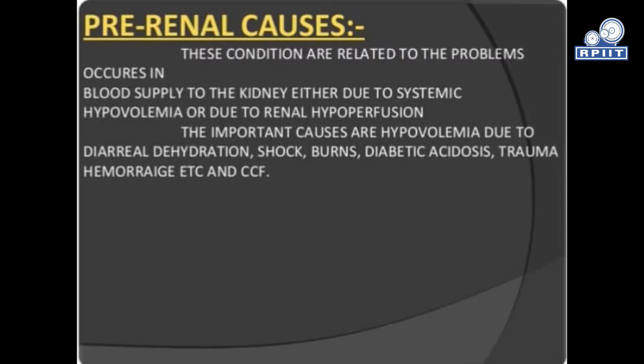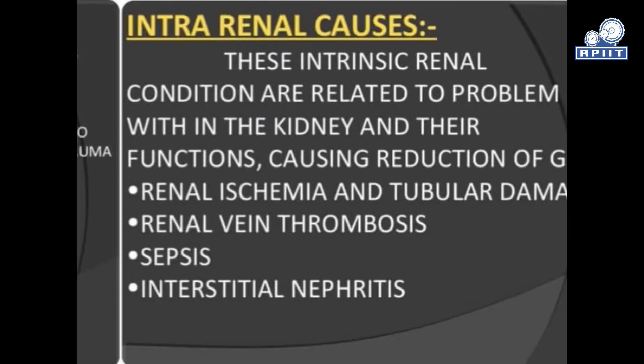Pre-renal causes: These conditions are related to problems occurring in blood supply to the kidney, either due to systemic hypovolemia or due to renal hypoperfusion. The important causes are hypovolemia due to diarrheal dehydration, shock, burn, diabetes, acidosis, trauma, hemorrhage, and CCF.